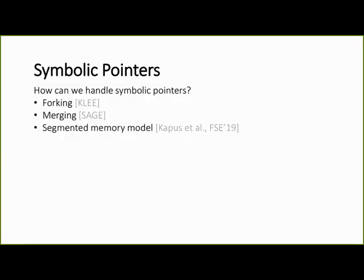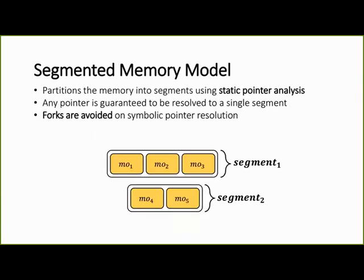We have several approaches for handling symbolic pointers. We have the forked model used in Vanilla Klee, the merging model used in Sage and Angr, and we also have the segmented memory model. In this model we use static pointer analysis to partition the memory into segments, such that every pointer is guaranteed to point to at most one segment. In this way we can avoid the forks when we access symbolic pointers.